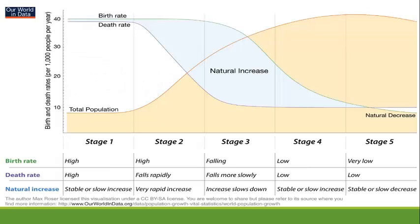This graph shows the relationship that the demographic transition model is trying to describe: the relationship between birth rates, death rates, and total population growth. This is a generalization — the particular circumstances of a country will impact exactly how quickly these rates rise and fall, how long it takes to move from one stage to another, and any anomalies or detours that might arise along the way. On average, however, this is the pattern we tend to see.